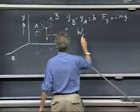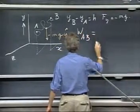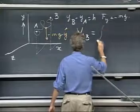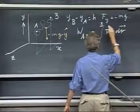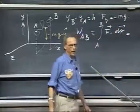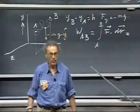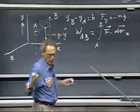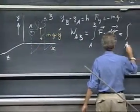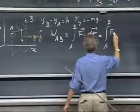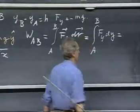And so if I calculate now the work in going from A to B, which is the integral in going from A to B of f dot dr, then the only term that I have is the one that deals with the y direction. The other terms have nothing in it. And so it is the integral in going from A to B of f_y dy.